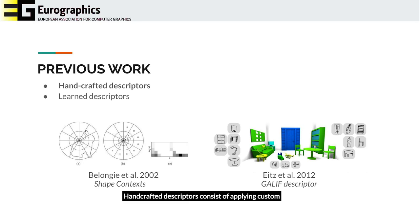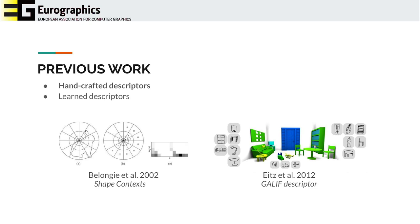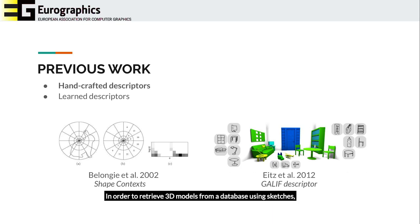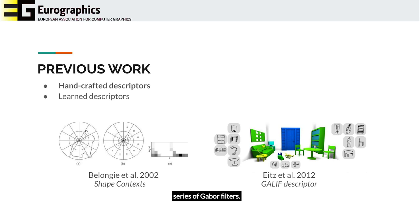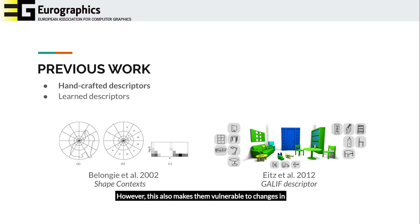Handcrafted descriptors consist of applying custom transformations over the input data in order to obtain a global or local descriptor of a target image. For example, the work of Beloghi et al. proposes to use radial histograms as local signatures of shape. In order to retrieve 3D models from a database using sketches, the work of Aids et al. builds global descriptors on top of a series of cardboard filters. The strength of these descriptors comes from their handcrafted nature, meaning we can customize them to adapt to a particular drawing style. However, this also makes them vulnerable to changes in orientation, projection, distortion, and shape variation as is commonly seen in line drawings.